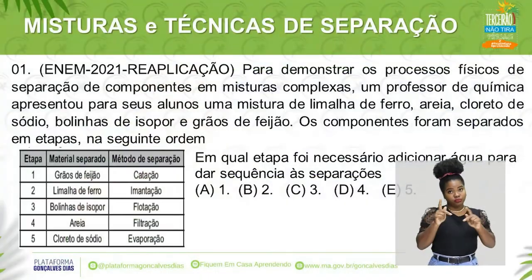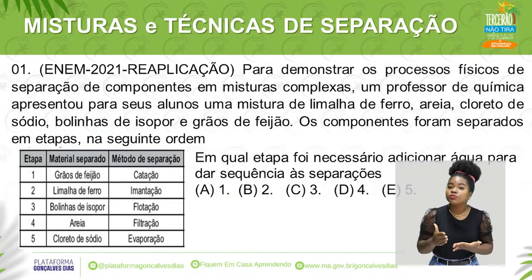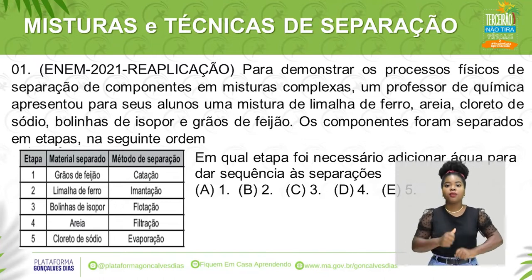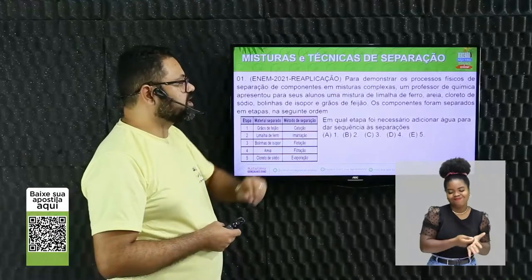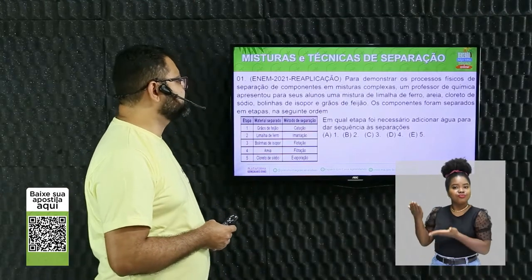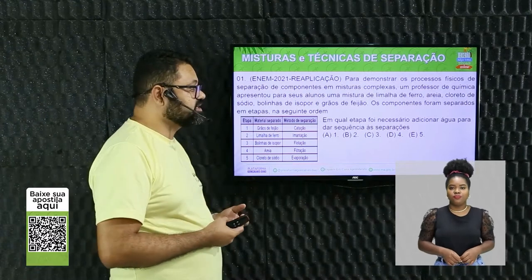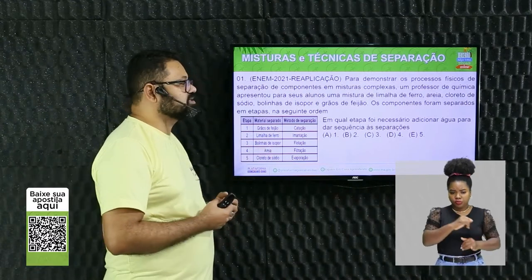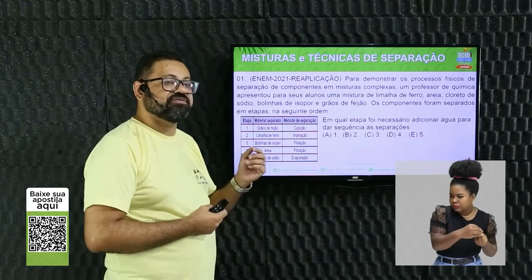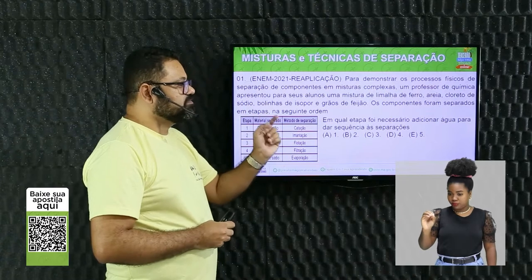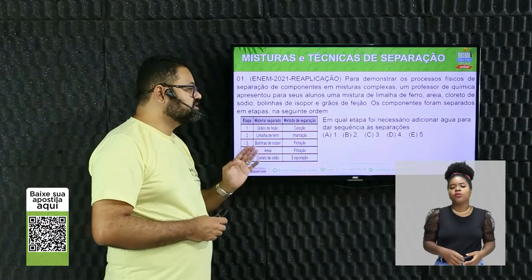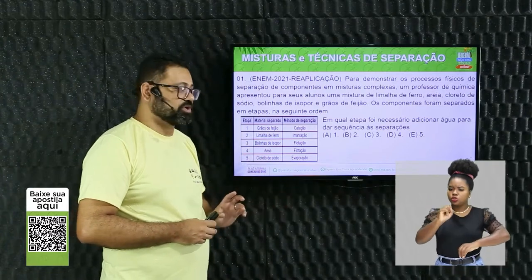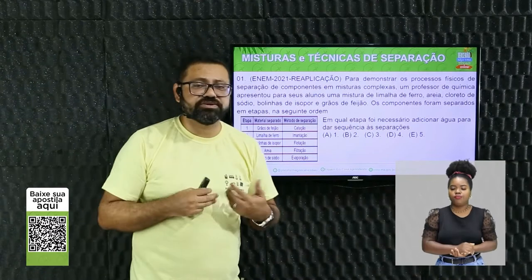Vamos à resolução. ENEM 2021, reaplicação — uma prova muito recente. Para demonstrar os processos físicos de separação em misturas complexas, um professor de química apresentou uma mistura de: limalha de ferro, areia, cloreto de sódio, bolinhas de isopor e grãos de feijão. Temos aqui cinco componentes.